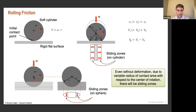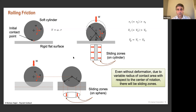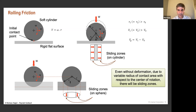Even for a spherical component on a raceway — as in ball bearings — without significant deformation, different distances between contacting points and the center of rotation cause some sliding zones at the two ends, with pure rolling in the middle. Mathematically, if there is no deformation, rolling friction is zero. But in reality, different distances from the center mean zero rolling friction is no longer valid.